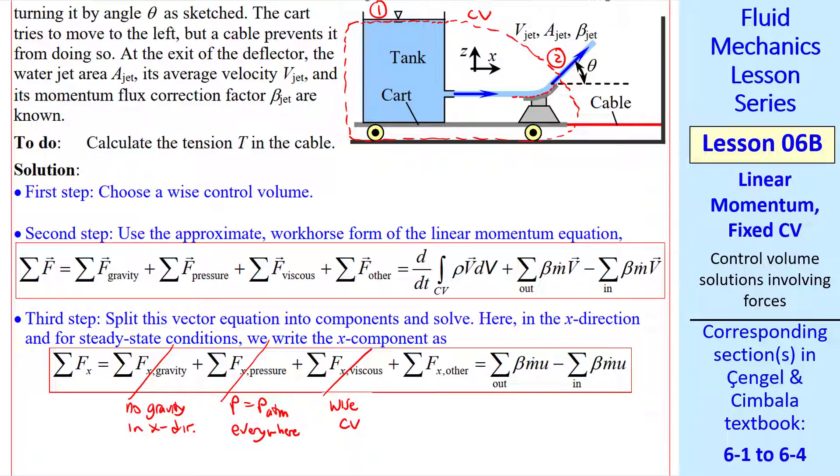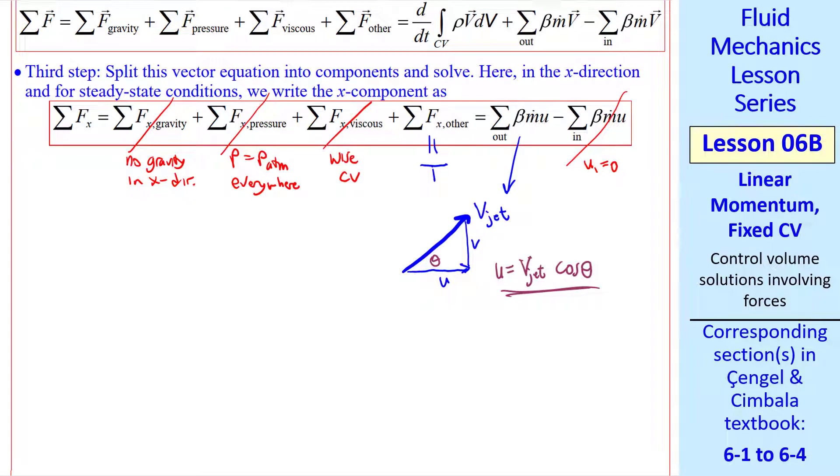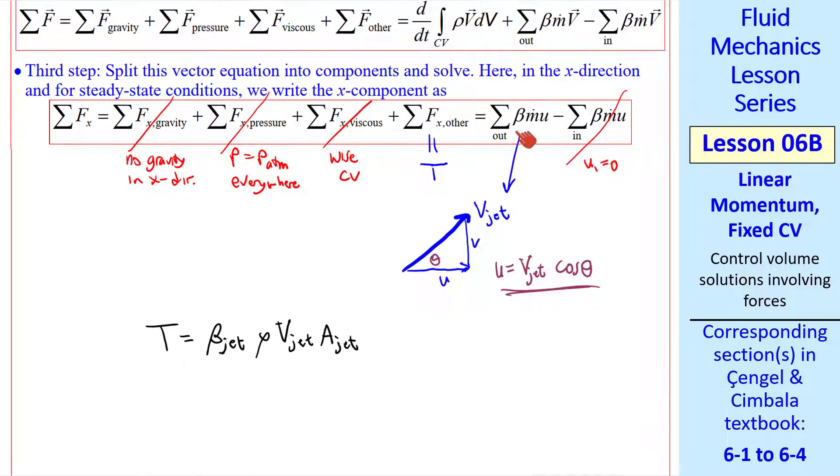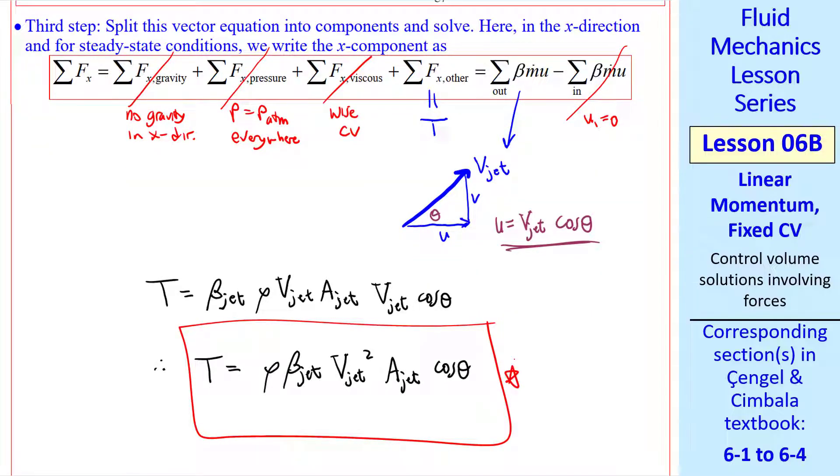The only other force is the tension T in the cable, which we must include since we're slicing the control volume through that cable. It's acting in the positive x direction. U is the x component of the velocity vector. And at our inlet one, u1 is zero. So this term goes away. Now we have to consider this term. We have v jet as the magnitude, but we're interested only in the u component. Since this angle is theta, u is equal to v jet cosine theta. Putting all these terms together and solving for T, the tension, T equal beta of the jet, m dot, which is rho v jet a jet, and then u, which we just said was v jet cosine theta. So our final answer is shown here. This is our final result in variable form. If I had given numerical values, you could just plug those in at this point.